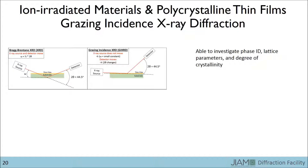As shown in the right panel, we can then hold the incident angle constant while the detector rotates through 2 theta, thereby keeping the penetration depth constant throughout the experiment. This is called grazing incidence X-ray diffraction. Our users regularly utilize this technique for phase identification, lattice parameter calculation, and the determination of the crystallinity of their samples.